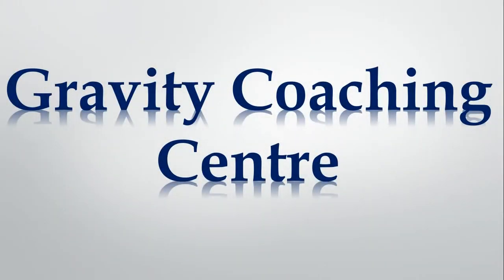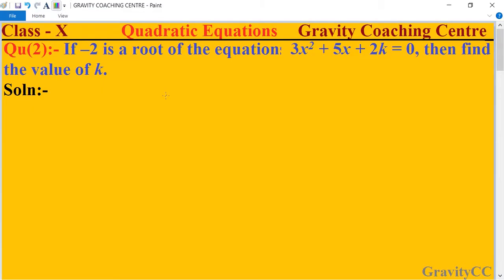Welcome to our channel Gravity Coaching Centre, Class 10, Chapter Quadratic Equations, Question Number 2. If -2 is a root of the equation 3x² + 5x + 2k = 0, then find the value of k.